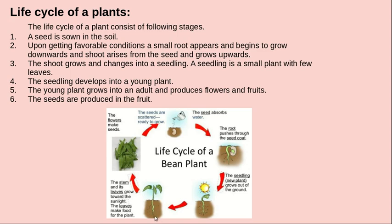The leaves grow towards the sunlight, which is used to prepare food for the plant. The plant grows into a large tree, produces flowers, which then become fruit containing seeds. The seeds are scattered, ready to grow again. This is all about the life cycle of a plant and an animal.